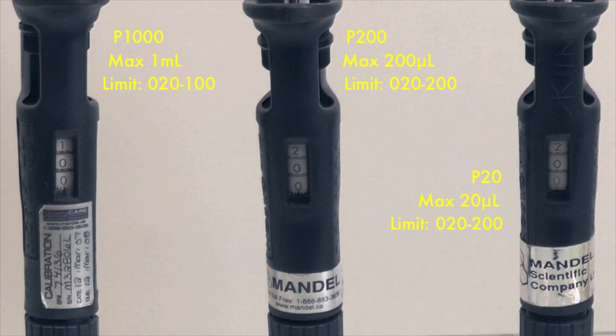For any volume lower than 200 microliters, you need to go to the next available pipetment, which is the P200. For P200, the range is between 20 microliters to 200 microliters, denoted by 020 to 200 on the dial.